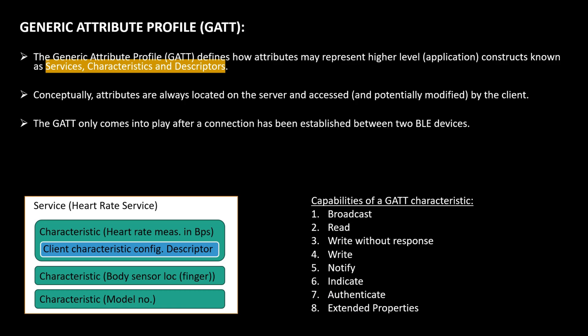The Generic Attribute Profile (GATT) defines how attributes represent higher-level constructs known as services, characteristics, and descriptors. While an attribute is how data is organized at the Attribute Protocol layer, at the GATT layer the same data is organized as services, characteristics, and descriptors. For example, with a heart rate sensor connected to an ESP32, the heart rate sensor itself is a service. Its characteristics can include heart rate measured in bits per second, body sensor location (where the sensor is placed), and the model number of the sensor. Similarly, for a temperature sensor service, characteristics could be temperature in degrees Celsius or degrees Fahrenheit.